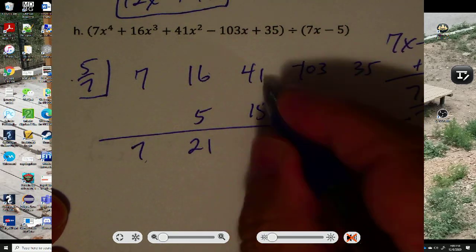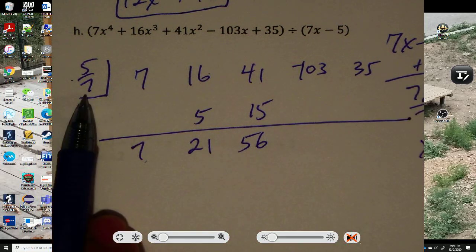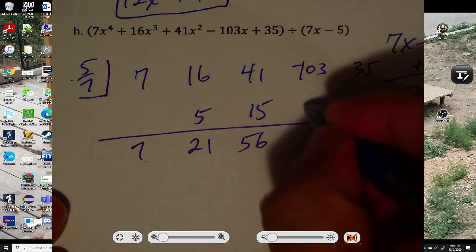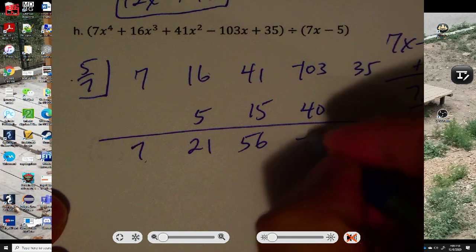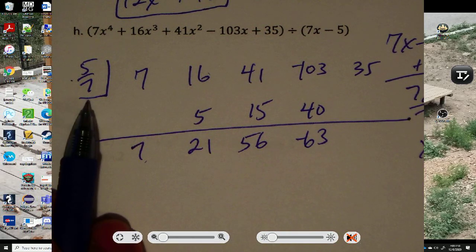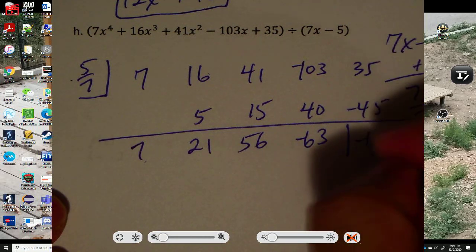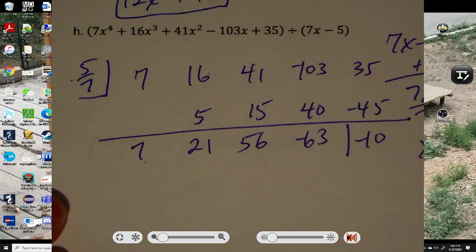Add. What's that? That's 56. 56 divided by 7 is 8. 8 times 5 is 40. Negative 63. Negative 63 divided by 7 is negative 9. Times 5 is negative 45. Combine. And you get negative 10.